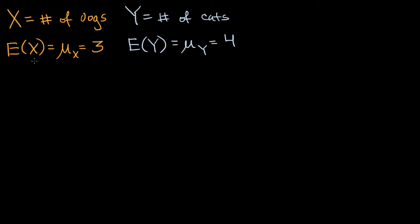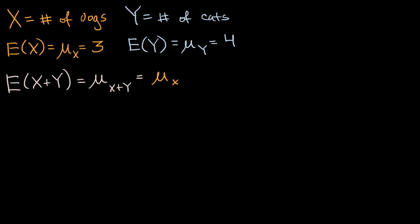In previous videos, we defined how you take the mean or the expected value of a random variable. What we're going to think about now is: what would be the expected value of x plus y? Or another way of saying that, the mean of the sum of these two random variables. Well, it turns out — and I'm not proving it just yet — that the mean of the sum of random variables is equal to the sum of the means. So this is going to be equal to the mean of x plus the mean of y. In this particular case, the expected number of dogs and cats I would see in a given day would be three plus four, which is equal to seven.